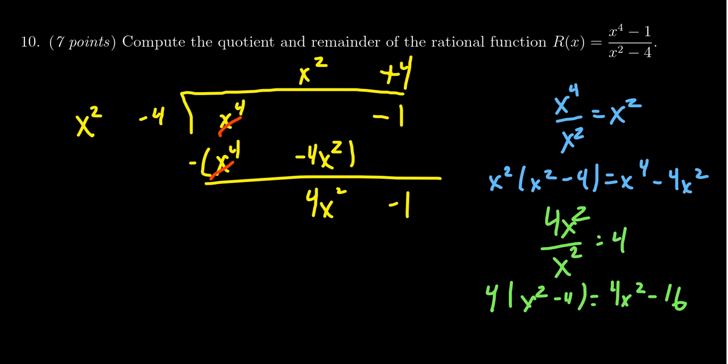We record 4x squared minus 16 and subtract this from above. Same thing again: the leading terms should cancel out. 4x squared minus 4x squared, they're gone. Then we have negative 1 minus negative 16, so 16 minus 1 gives us 15. This is our remainder.